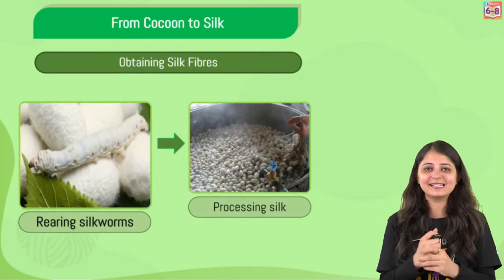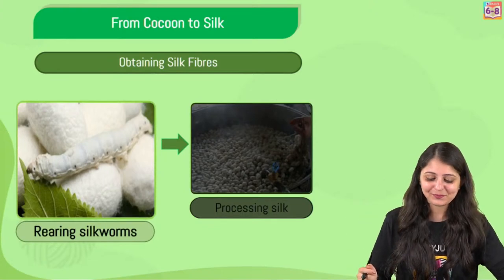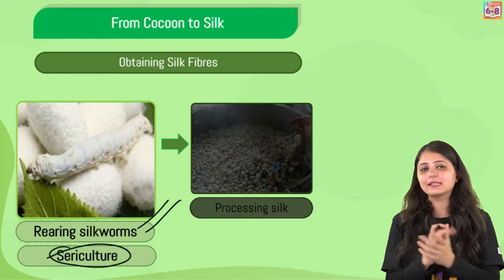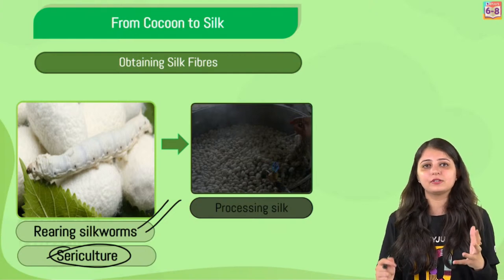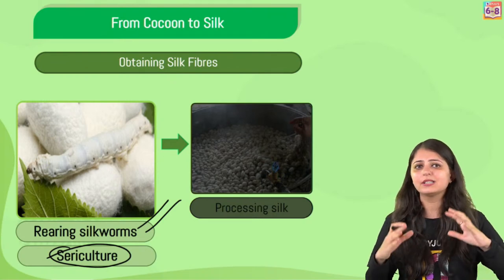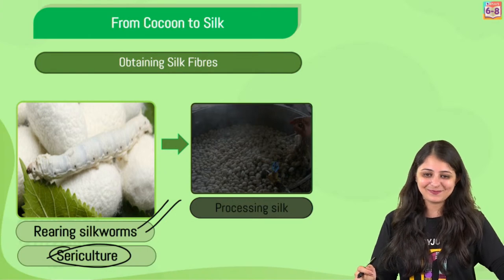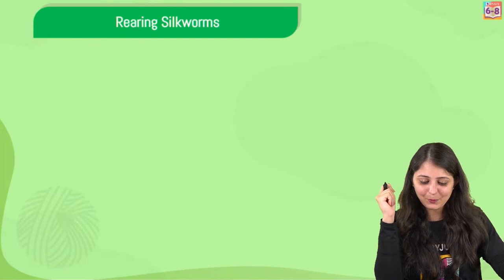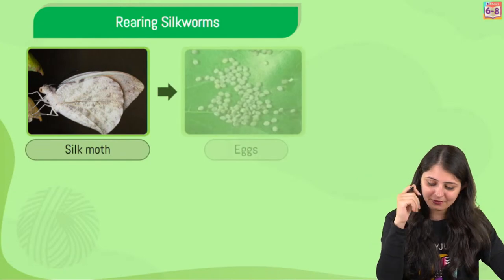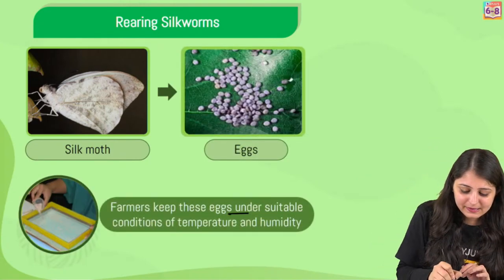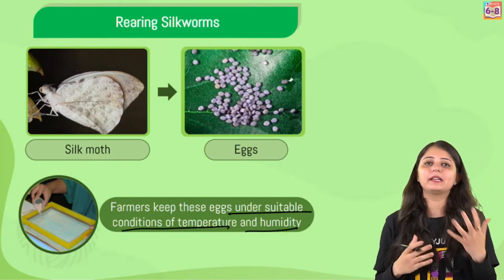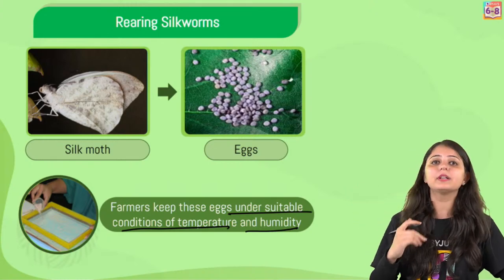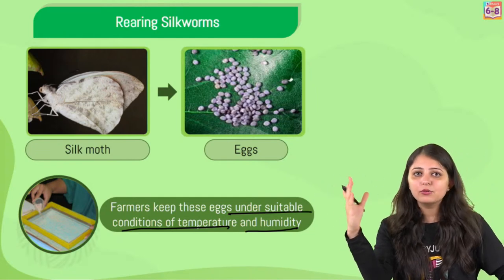From cocoon to silk - rearing of silkworms for obtaining raw silk is known as sericulture. We know this term - if they ask in the exam, we know what this means. Silkworms are reared at some appropriate temperature and humidity - there are certain conditions - and that's how we get the silk threads. The farmers keep these eggs under suitable conditions of temperature and humidity, and also try to maintain a lot of hygiene.